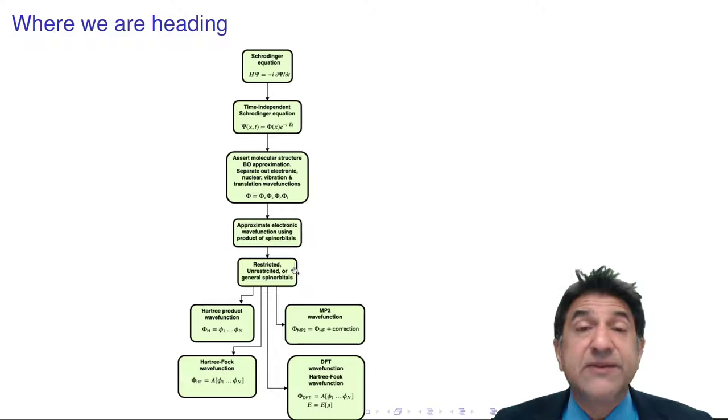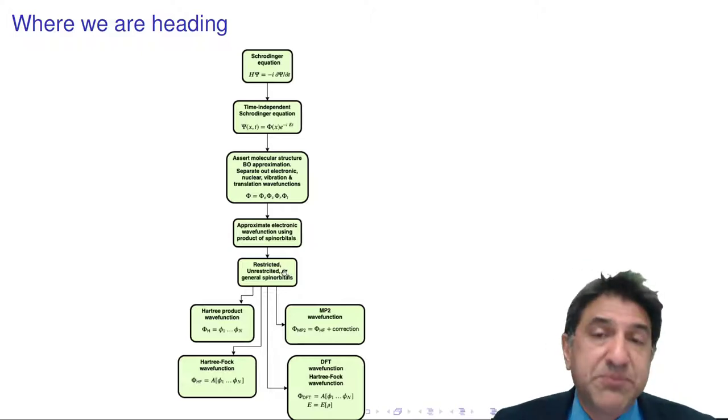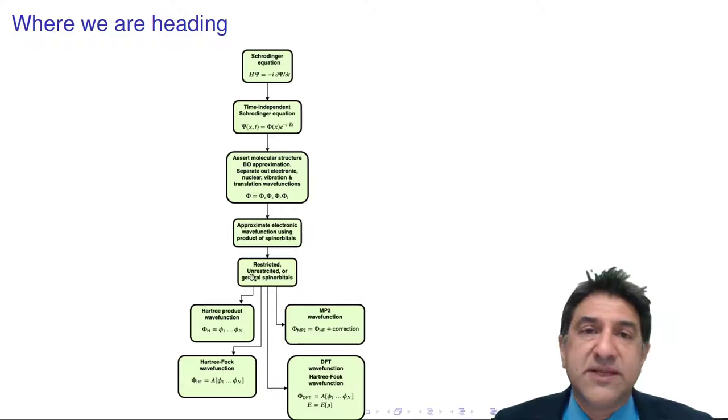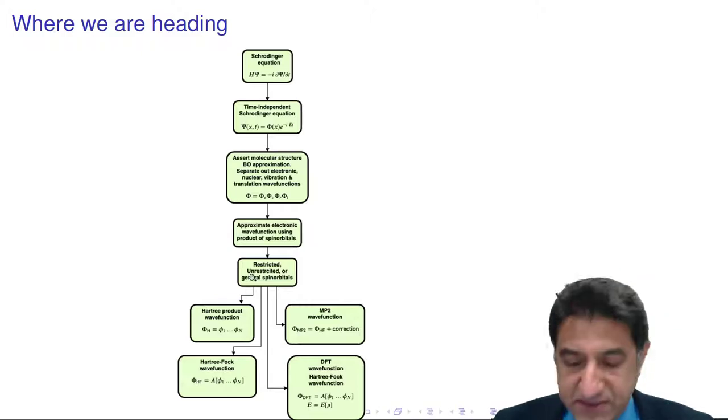And in all of these types of wave functions we can have either restricted or unrestricted types of theories. Basically those involve theories where alpha and beta electrons, up and down spin electrons, are forced to occupy the same spatial regions of space and where they are not when they're not restricted to occupying the same region of space. So that's where we're headed.